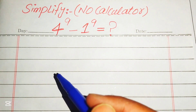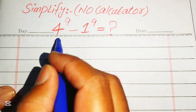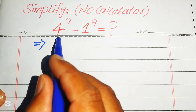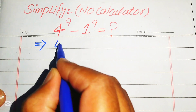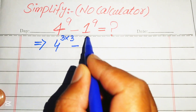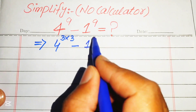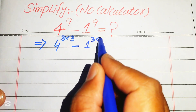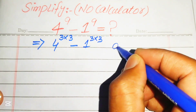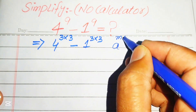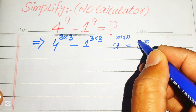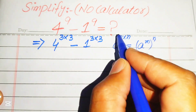The very first thing we are going to do is rewrite this algebraic expression. We write 4 to the power of 9 as 9 equals 3 multiplied by 3, and we write the second term similarly as 3 multiplied by 3. Now we use the exponent law: if we have a to the power of m multiplied by n, we write it as a to the power of m, to the power of n.